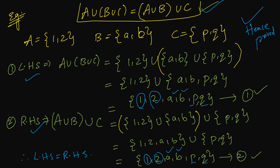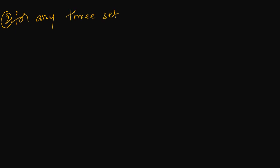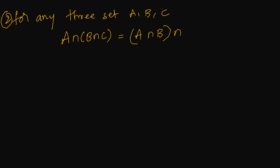Now let us see the second associative law. For any three sets A, B, C, the formula is: A intersection with B intersection C is nothing but A intersection B, then intersection with C.